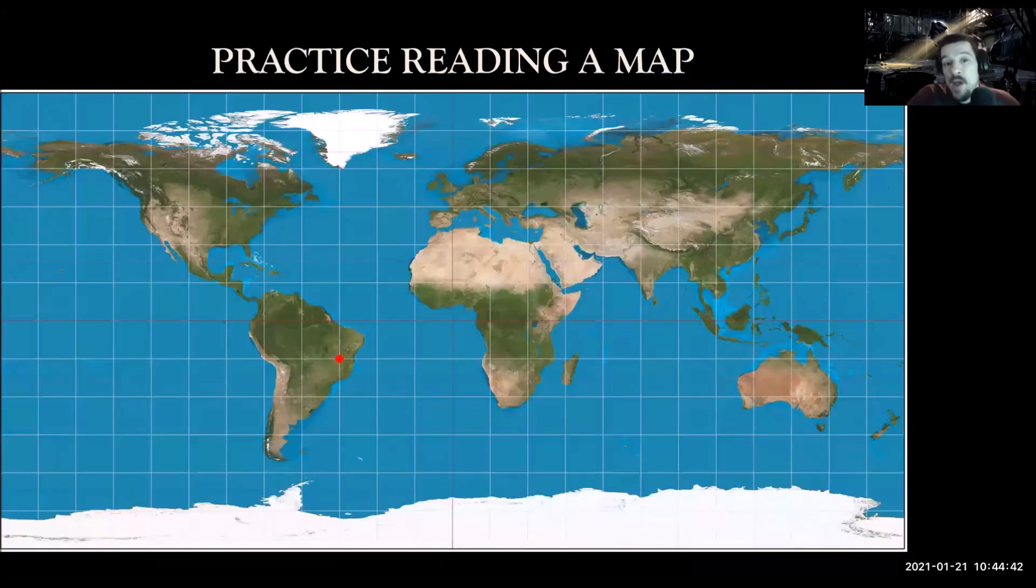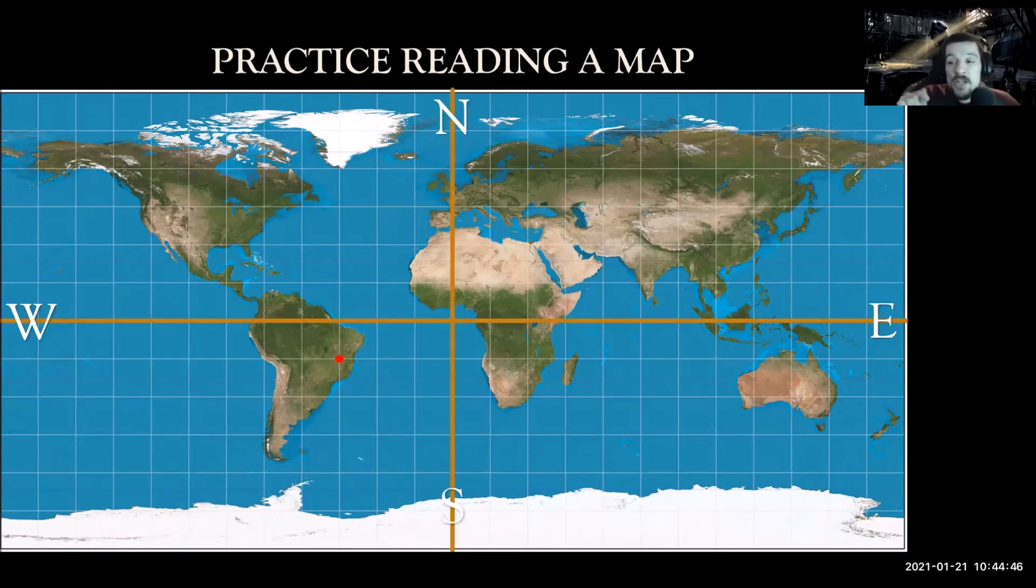You guys should practice reading a map. Go ahead and try to read this one. See that little red dot? How far south is it? How far north is it? How far east is it? How far west is it? We want to start at the equator and work our way down. We're only one line down. Each line is worth 15 degrees, so we have gone 15 degrees to the south. Then we want to work our way to the left: one, two, three lines. That's 15, 30, 45 degrees to the west. So this location would be 15 degrees south, 45 degrees west, and that puts you right there, smack dab in South America.